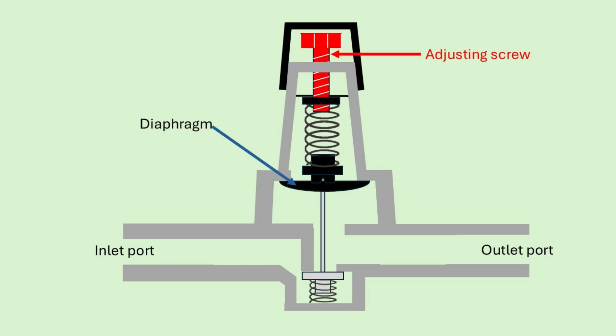Above the diaphragm is the adjusting screw. Turning the screw compresses or loosens the spring beneath it. The tighter the spring, the more force it exerts on the diaphragm, increasing the pressure required to move the diaphragm and close the valve.